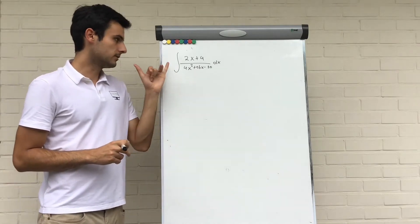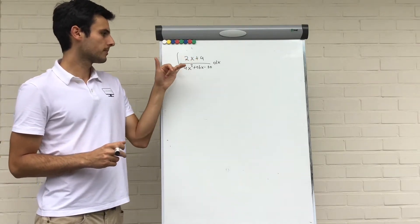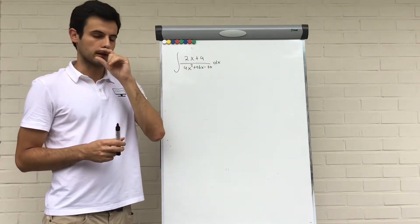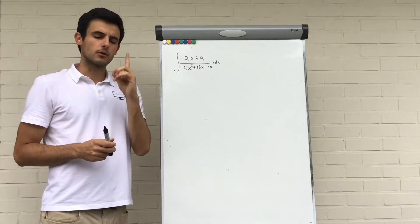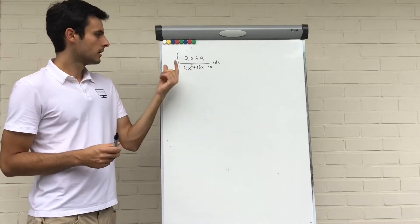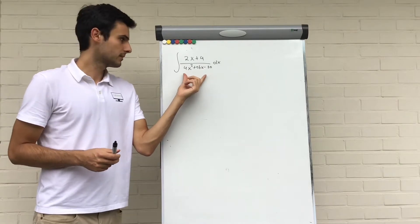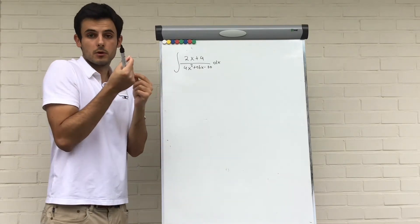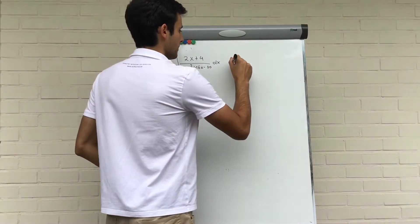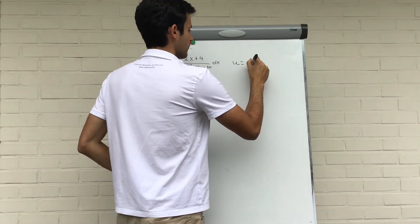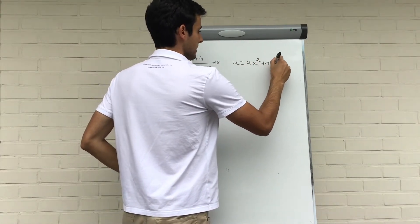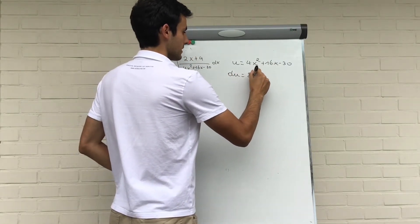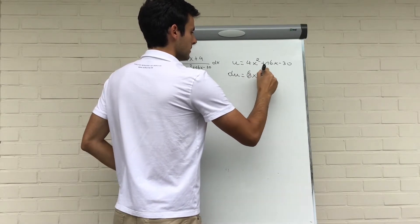First example: we have the integral of 2x plus 4 divided by 4x squared plus 16x minus 30, dx. The first option is always substitution. We see that in the denominator is something of the second degree and in the numerator is something of the first degree. So we let u equal 4x squared plus 16x minus 30, then the derivative of u equals 8x plus 16, dx.